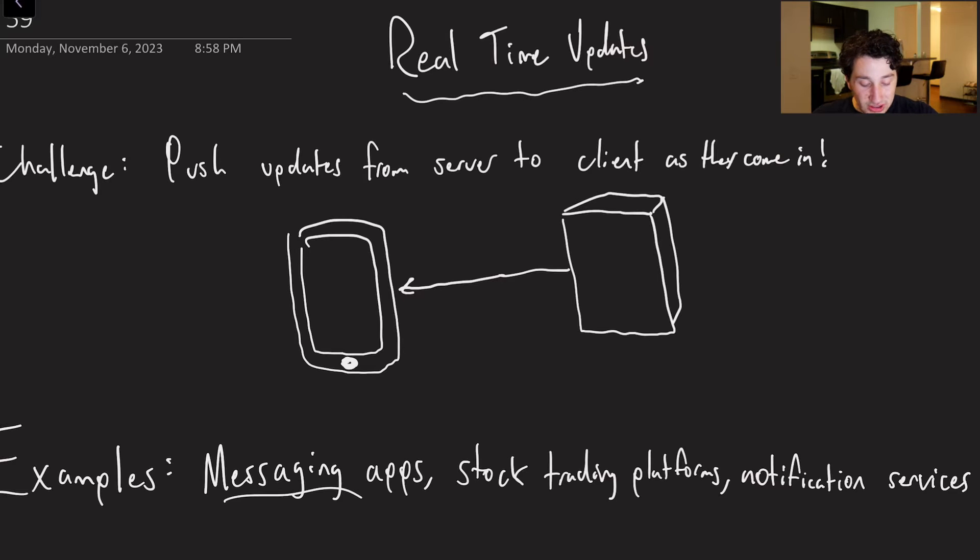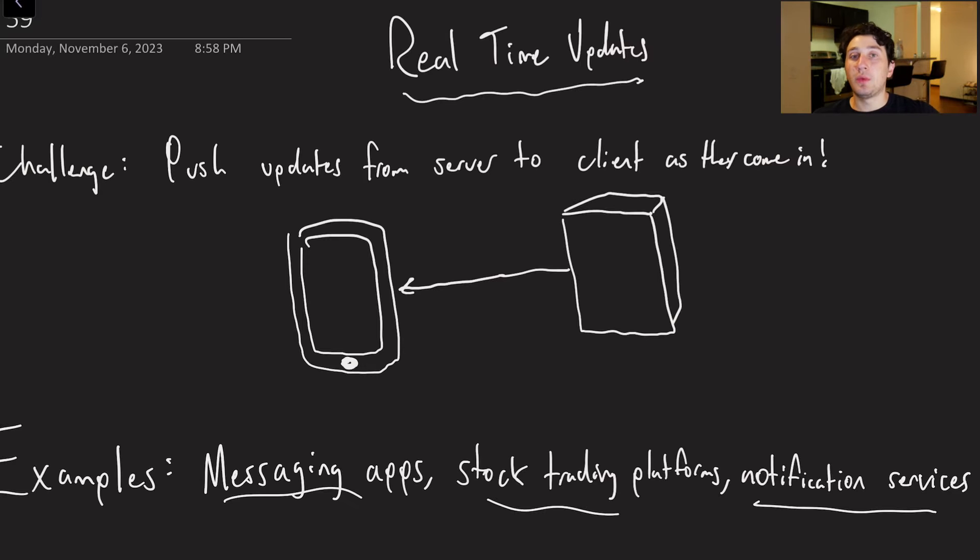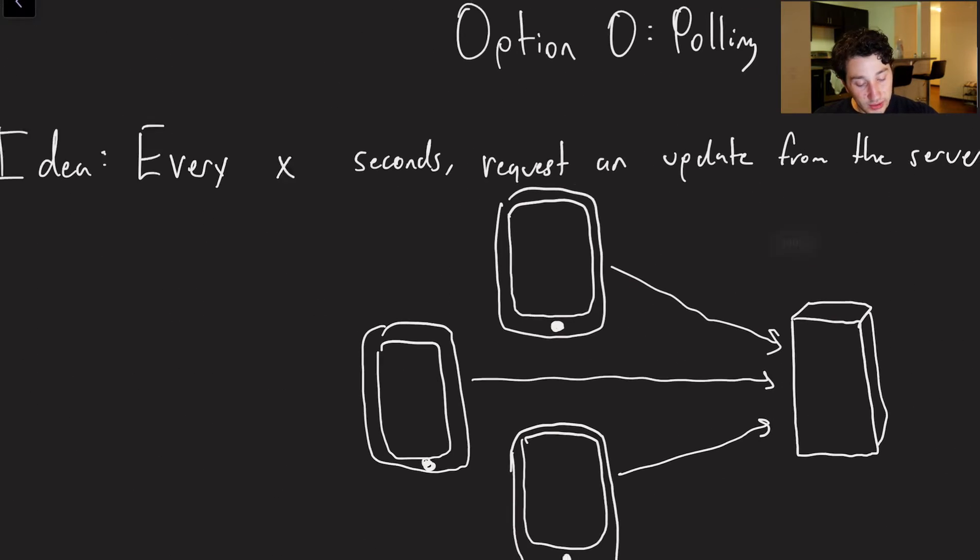This is relevant in things like messaging apps, stock trading platforms, notification services. Basically, we don't want to have to make the client ask all the time. It would be a lot better if the server could just go ahead and push data right to it. Well, why don't we want the client asking all the time?